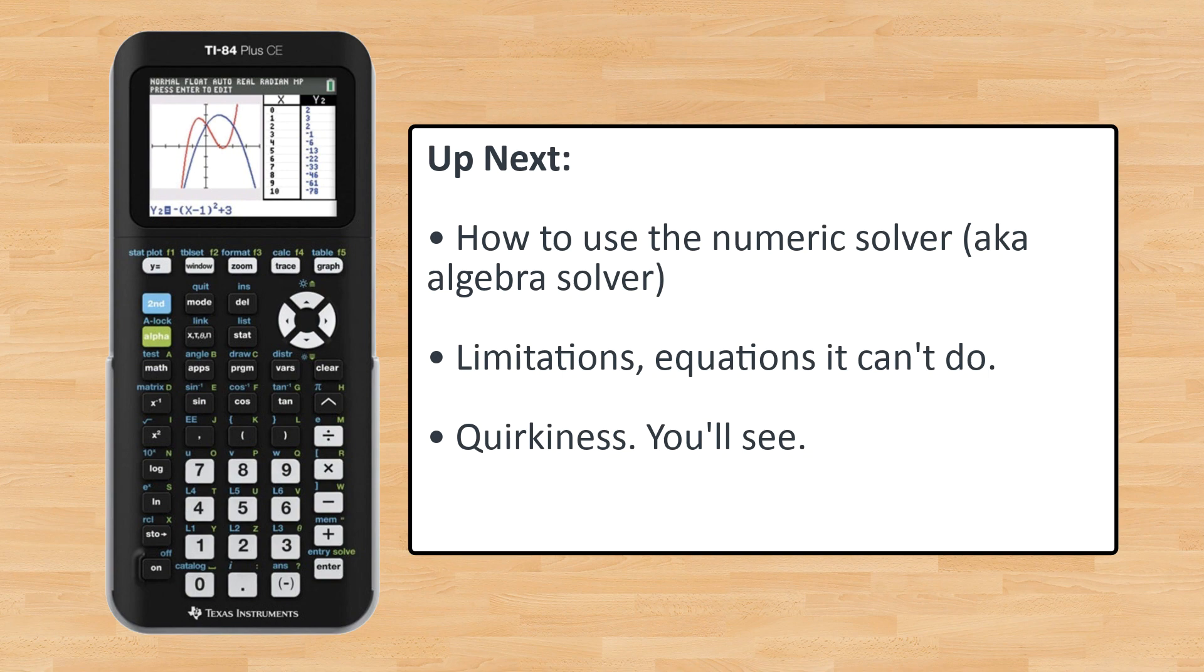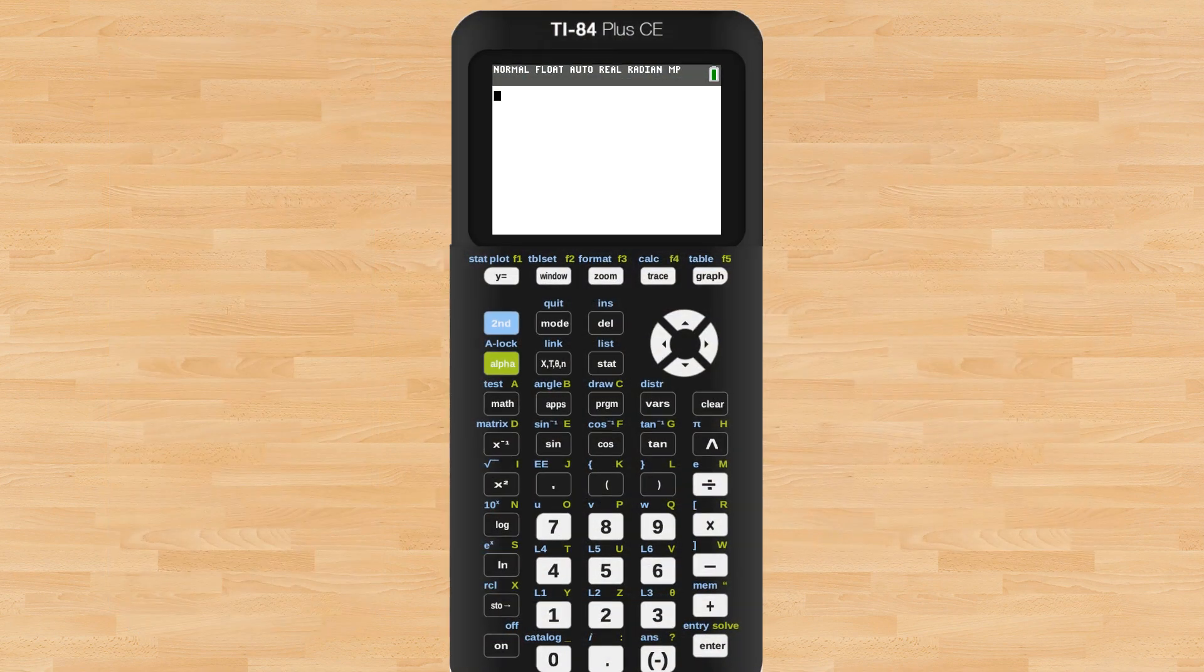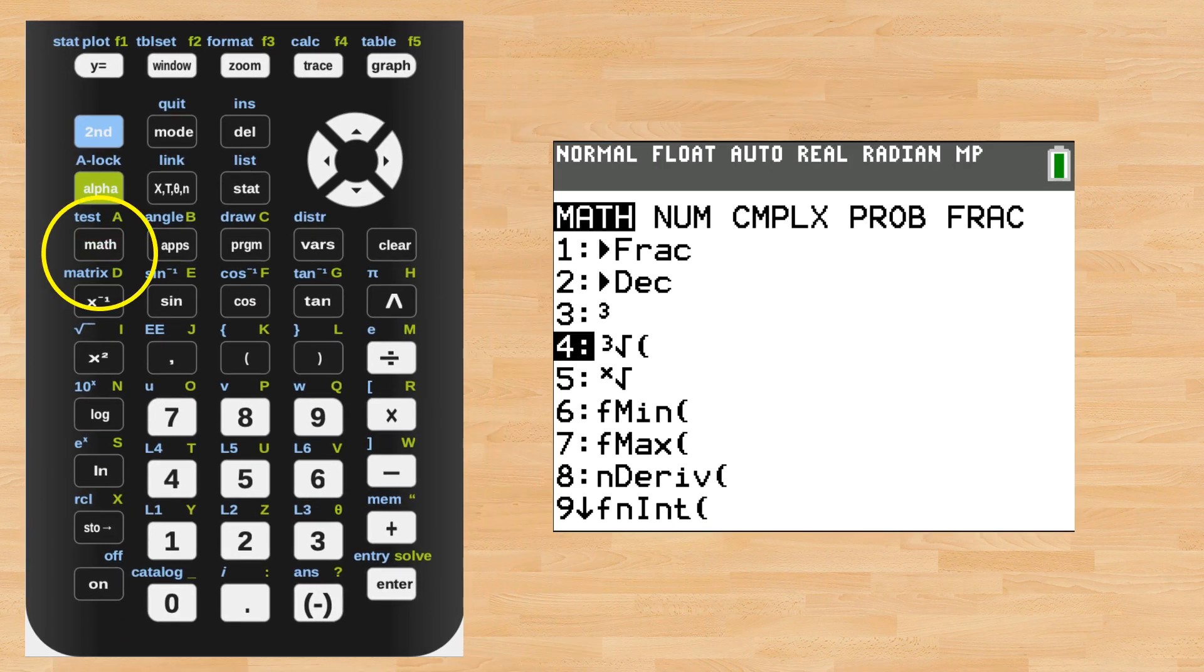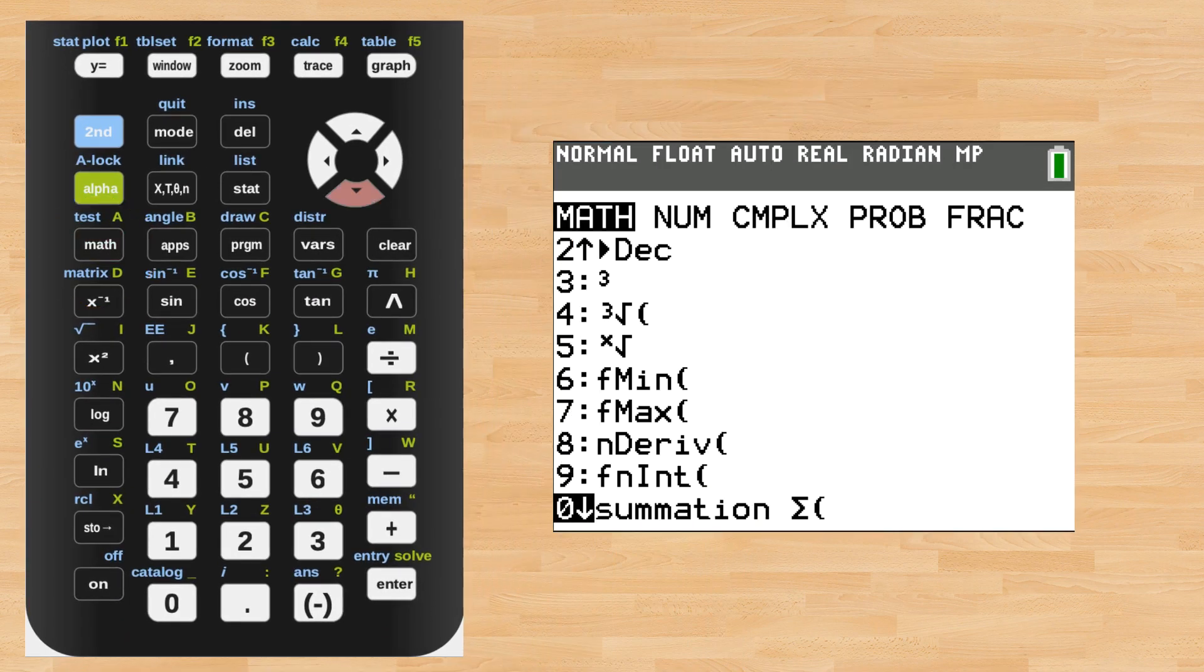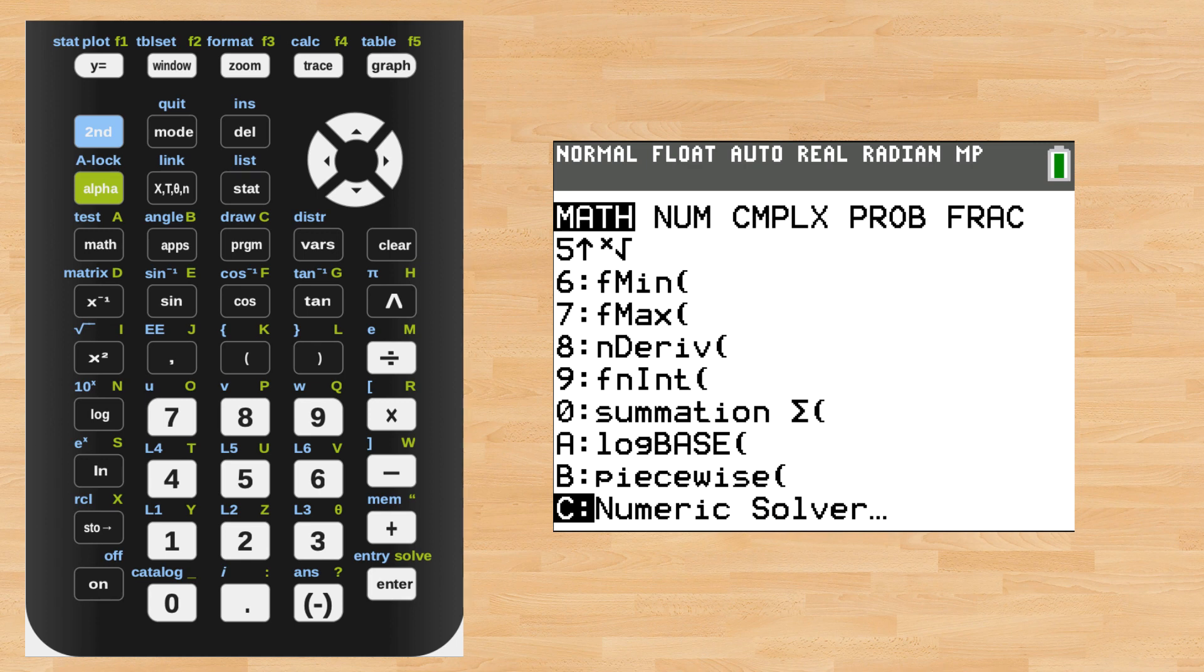Okay, let's take a look at where it is on your calculator and how to use it. It's found under the math key and then it's somewhat hidden at the very bottom of the list. It's option C and it's called the numeric solver, and yes, it can solve algebra questions.